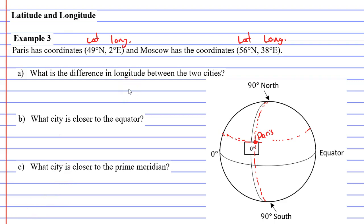Alright, so we'll look at Moscow now, which has the coordinates 56 degrees north. Now I've just realized, what I think I might do is I'll write here 49 degrees north and, sorry, 2 degrees east. So we can see that there.